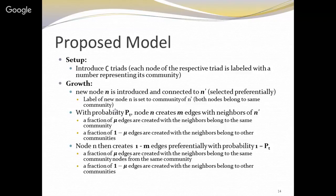If the mixing parameter is 0.5, that means 50% of the edges will be created with neighbors belonging to the same community, say community 3, and 50% of the edges will be created with neighbors not part of that community. With probability 1 minus Pt, we create preferential edges, similar to the Barabási model. It is a similar model except we are introducing communities and a mixing parameter.